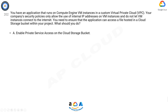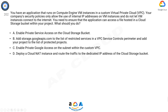What should you do? A) Enable private service access on the Cloud Storage bucket. B) Add storage.googleapis.com to the list of restricted services in a VPC Service Controls perimeter and add your project to the list of protected projects. C) Enable Private Google Access on the subnet within the custom VPC. D) Deploy a Cloud NAT instance and route the traffic to the dedicated IP address of the Cloud Storage bucket.